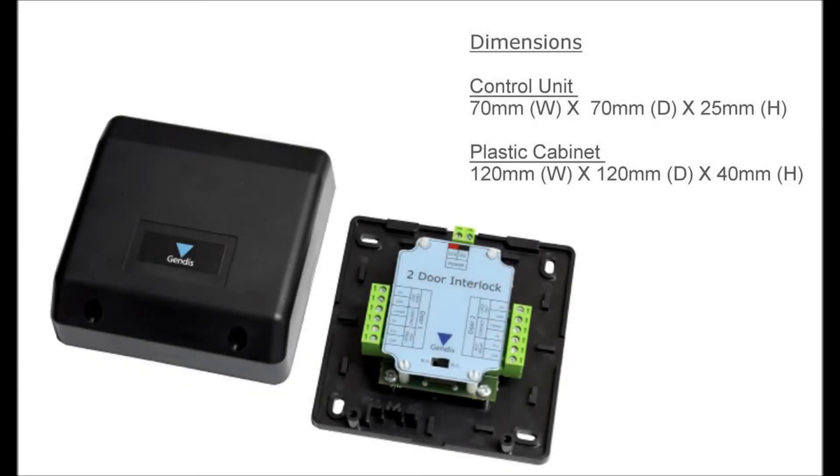This is the Gendis two-door interlock, sometimes called an airlock device. It's a small device powered by the controller or lock supply and has a simple switch towards the bottom of the wiring label that selects between normally open, as is typically a lock release, or normally closed, such as a maglock. Both doors must use the same lock type.